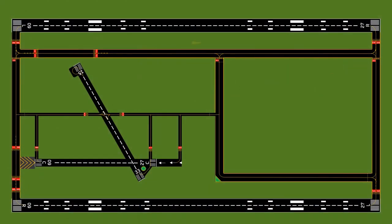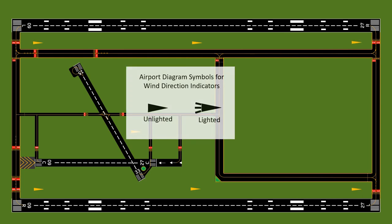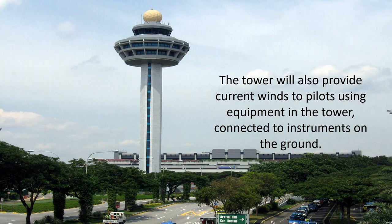Wind socks are placed at strategic positions around an airfield. On an airport diagram, an unlighted wind sock looks one way, and if they are lighted for nighttime use they have three additional stripes. Big international airports will have more sophisticated instruments than just a wind sock, and the tower also has instruments to tell pilots the wind.